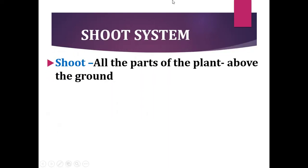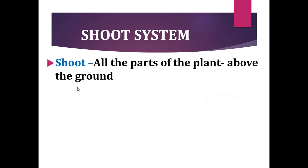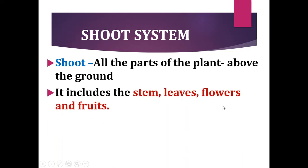The shoot system of the plant includes all the parts of the plant above the ground. It includes the stem, leaves, flowers and fruits. So the parts of the plant which are above the ground are called the shoot, which includes stem, leaves, flowers and fruits.